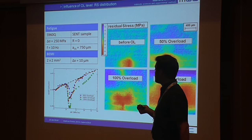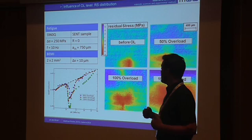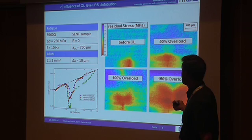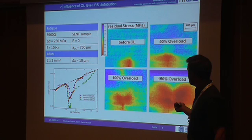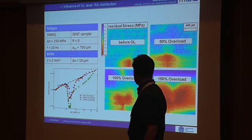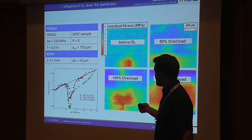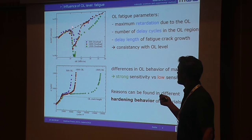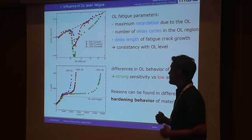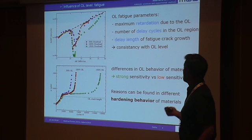We took several cracks, fatigued them under constant amplitude to a certain crack length, applied different overload levels, and measured the residual stress with magnetic Barkhausen noise. Before the overload, you already see a compressive residual stress field around the crack, originating from the wake of the plastic zone. After the overload, this compressive residual stress field begins to evolve, especially in front of the crack, increasing both in size and amplitude. This can be linked to the maximum deceleration — the ratio of the crack growth speed without overload to the crack growth speed with overload — as well as the number of delay cycles and the delay length.